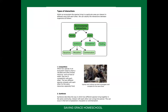Different species interact in an ecosystem in many different ways. You get abiotic, which is your non-living organisms. Then with your biotic organisms, which are living, you get symbiosis, which can occur in the form of parasitism, mutualism, and commensalism. It can also occur through competition and feeding.